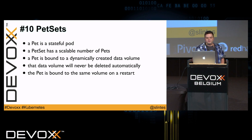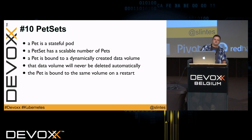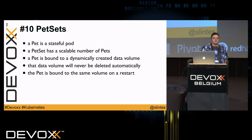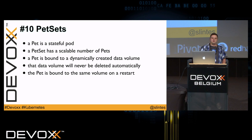For stateful pods, the next step is pet sets. A pet is a stateful pod, and a pet set can run one or more of these pods. Each pet is bound to a dynamically created data volume — unlike a normal replica set where every pod uses the same volume, here each pod gets its own. That data volume is never deleted, so on a pod restart it always gets its own data volume back.